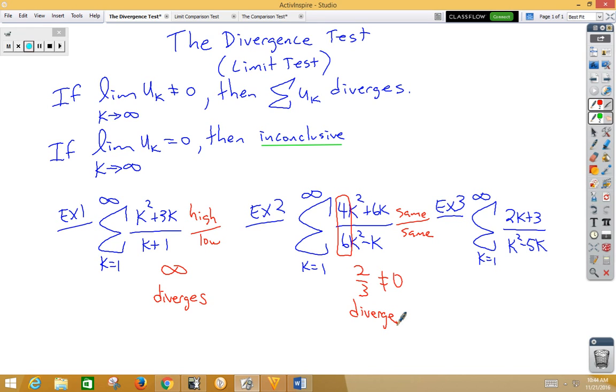In our third example, we have a low-high, and a low-high is indeed zero. And since zero equals zero, this would be inconclusive, and we would need to choose another test. So the good news about the divergence test is it's really easy to use. The bad news is it doesn't work very often.